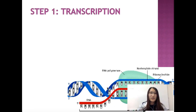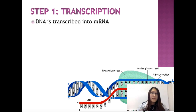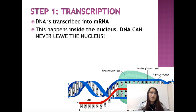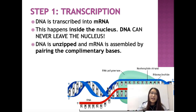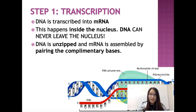Let's take another look at transcription in a little more detail. DNA is transcribed into mRNA — this happens inside the nucleus. DNA cannot leave the nucleus, as we said. DNA is unzipped, and the mRNA is assembled using complementary base pairs: A to U, T to A, C to G, G to C.